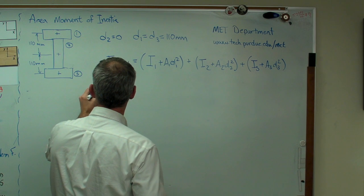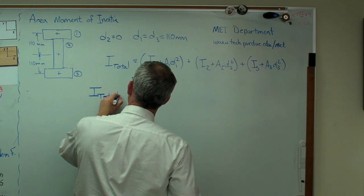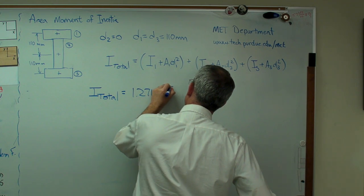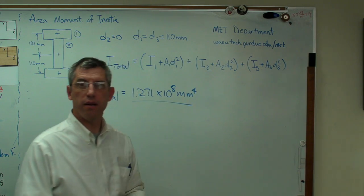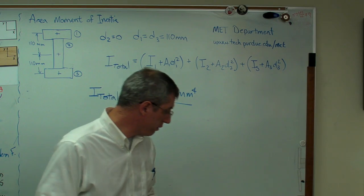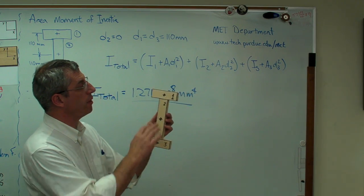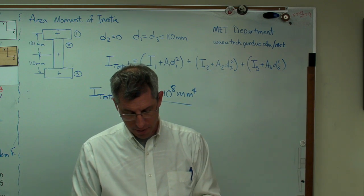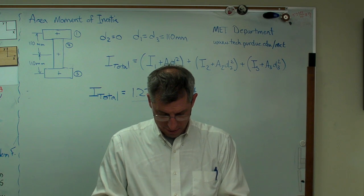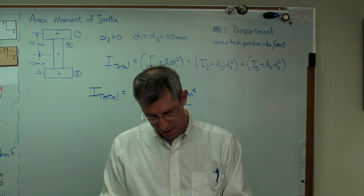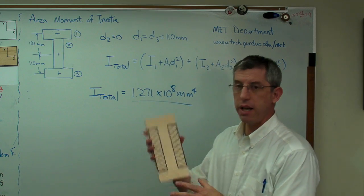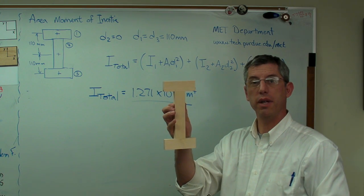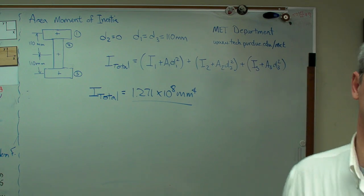If you add all this up, you get 1.271 times 10 to the 8 millimeters to the 4th. Well, son of a gun, we've seen that number before. What we've done now is we've taken this shape and calculated the area moment of inertia by adding up the effects of these three boxes, just like I did there. We've used a negative area method to put this thing back together. The negative area method started with this outer rectangle and subtracted out that area and that area to get an equivalent answer.